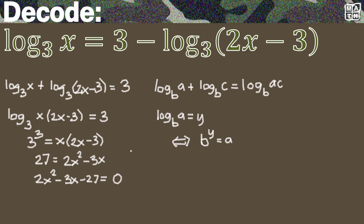Now we solve for x in quadratic form, and we can factor it using the AC method. AC means you multiply A, which is 2, times C, which is negative 27, giving a result of negative 54. There are many factor pairs of negative 54, but only one pair that when added gives negative 3 — the middle term — and that pair is negative 9 and 6. Negative 9 times 6 is negative 54, and negative 9 plus 6 gives the middle term.